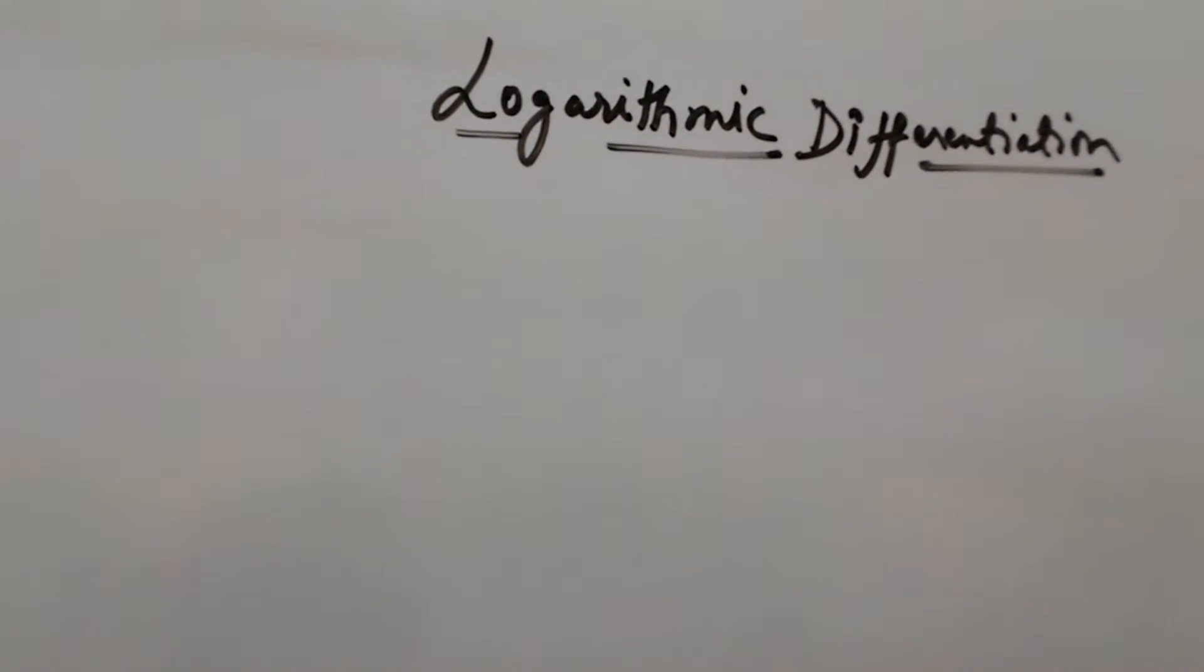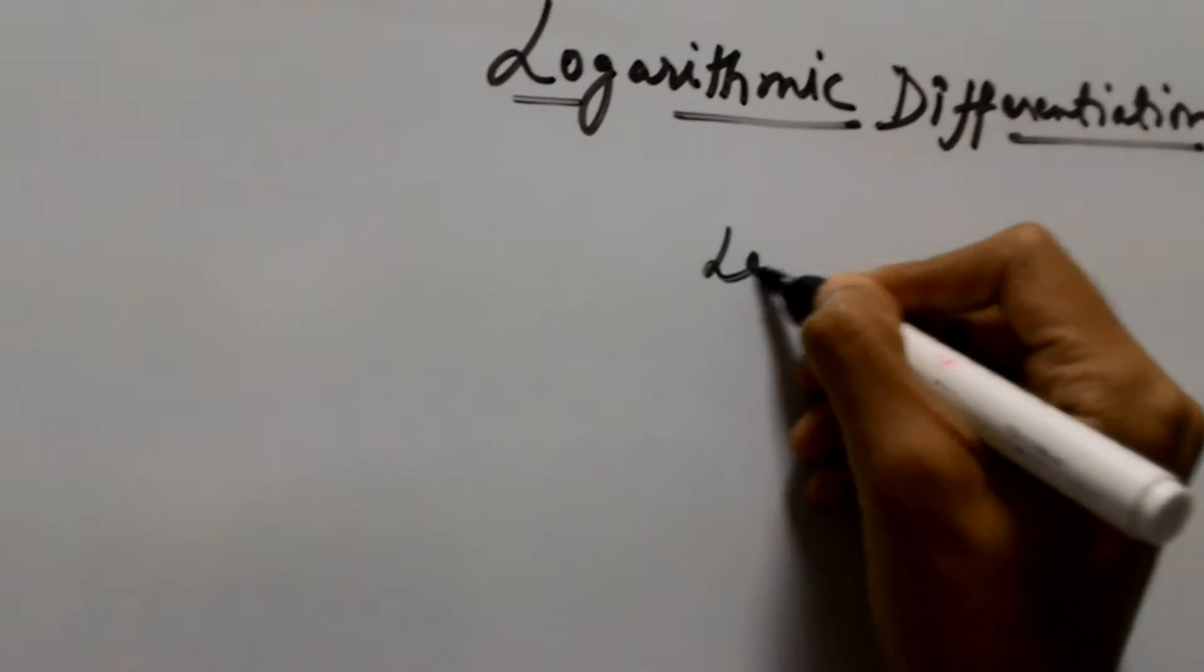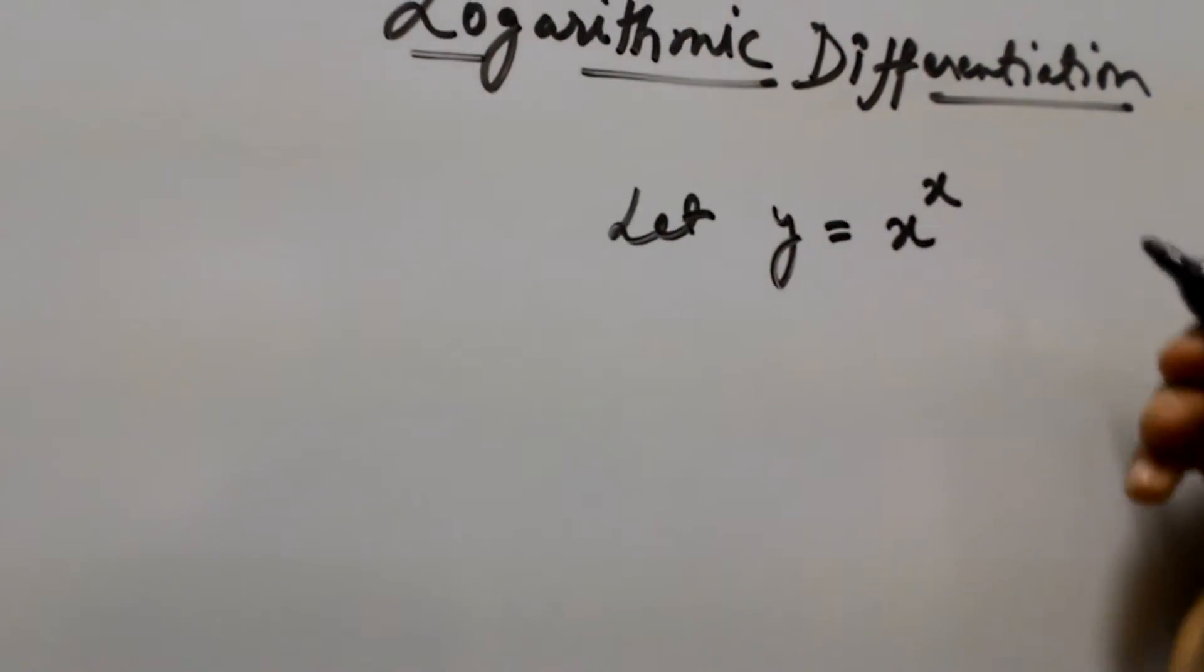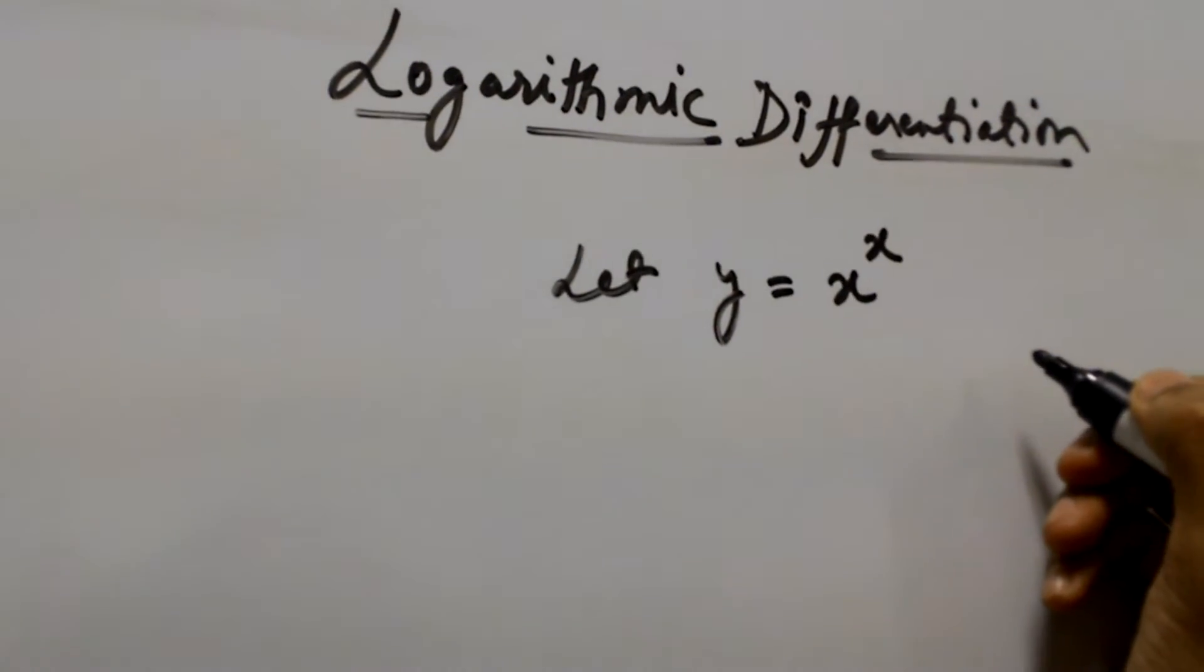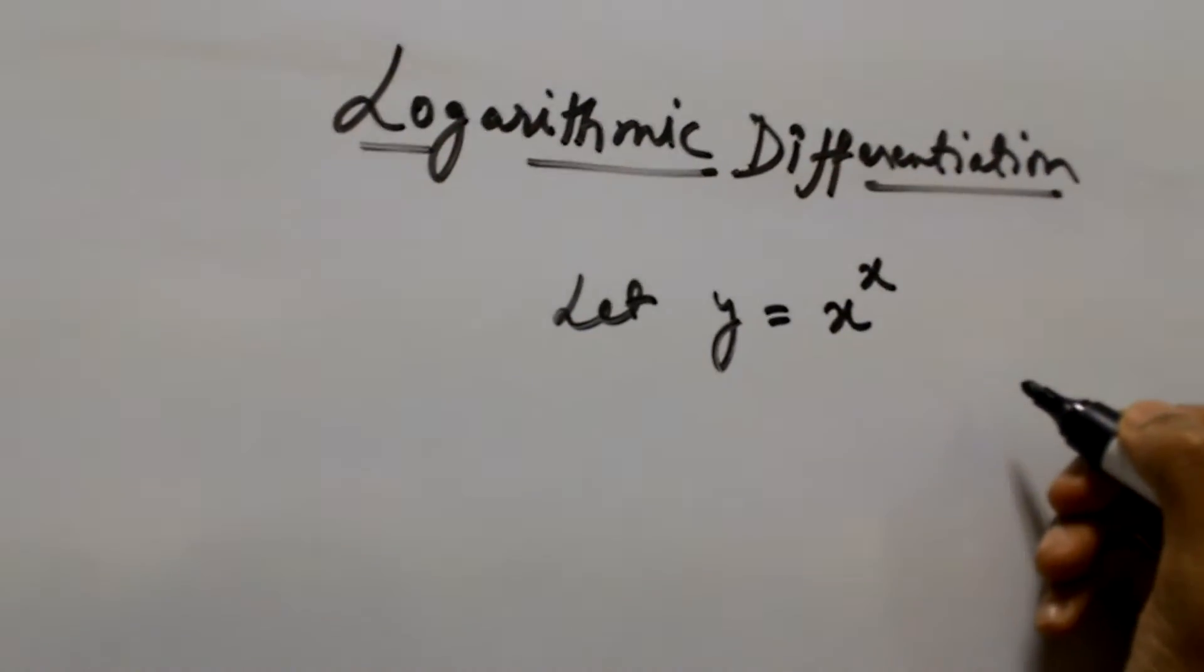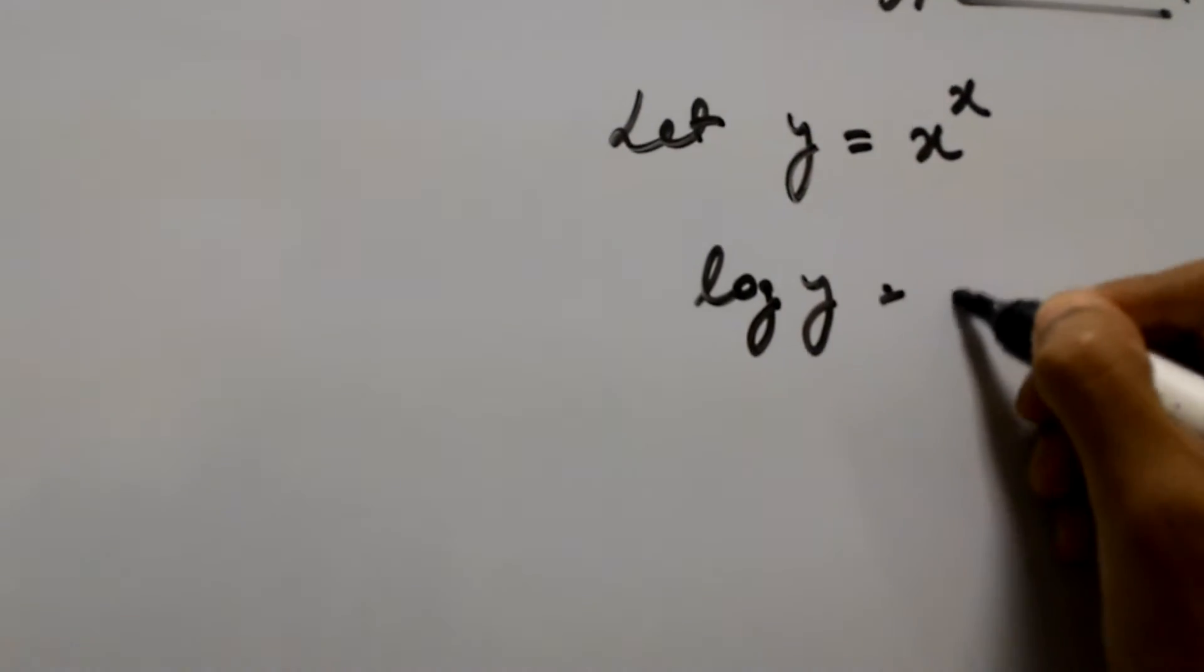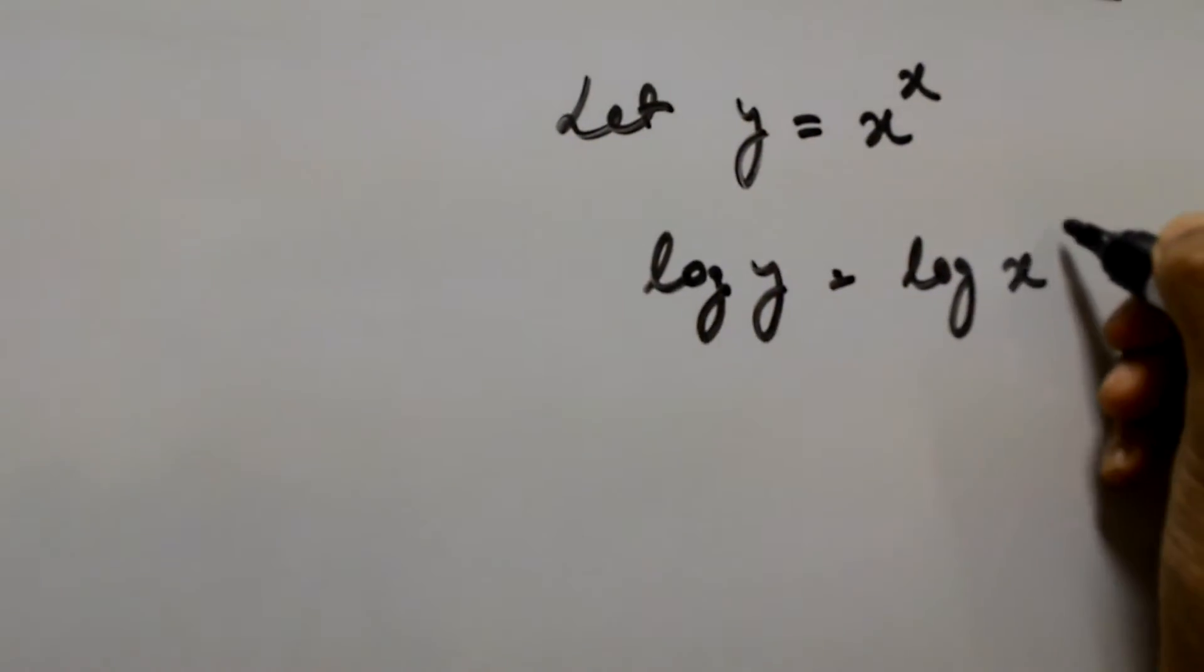We'll see the concept of logarithmic differentiation. Let us suppose we have a function y equals x raised to the power x. Now we need to differentiate this function with respect to x. So what we do, we take log on both the sides, so log y equals log of x raised to the power x.